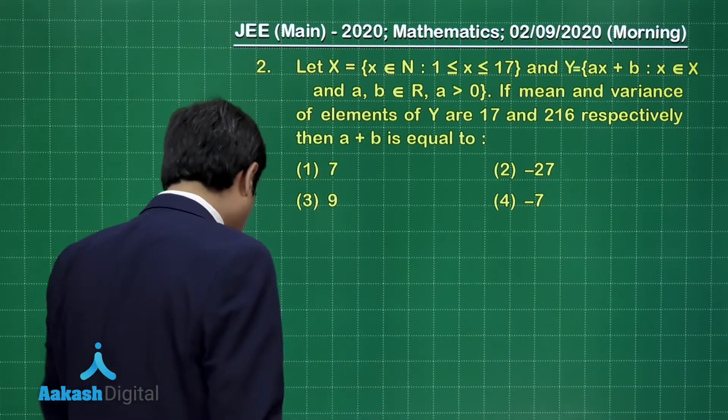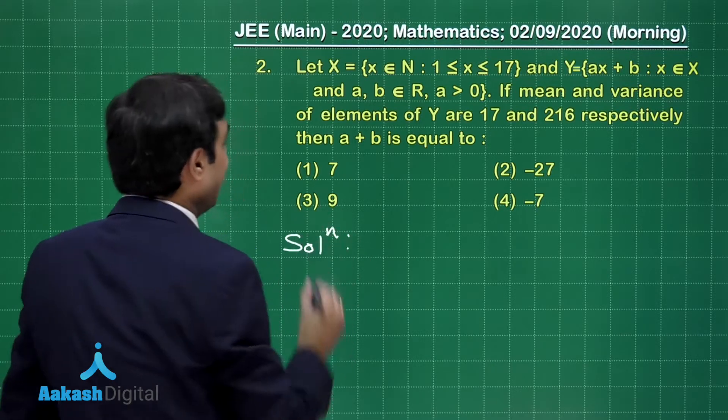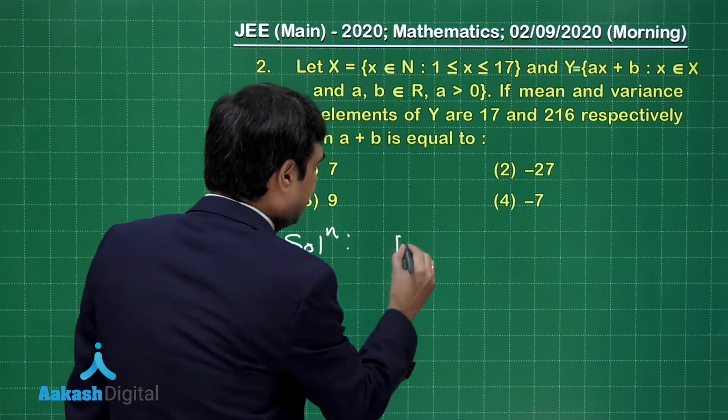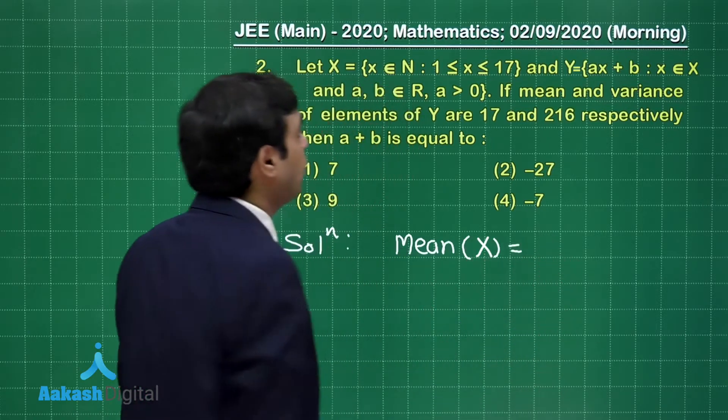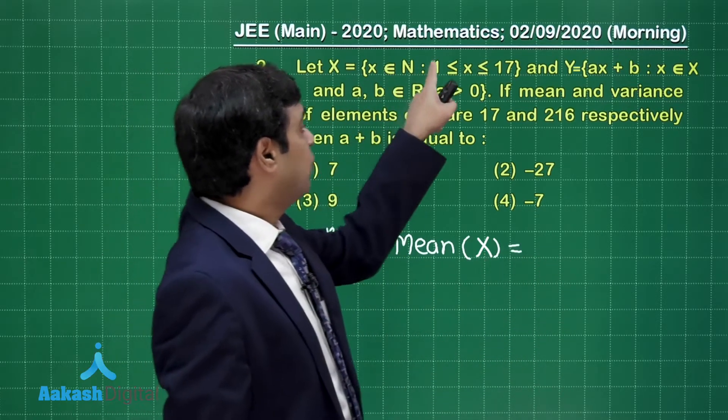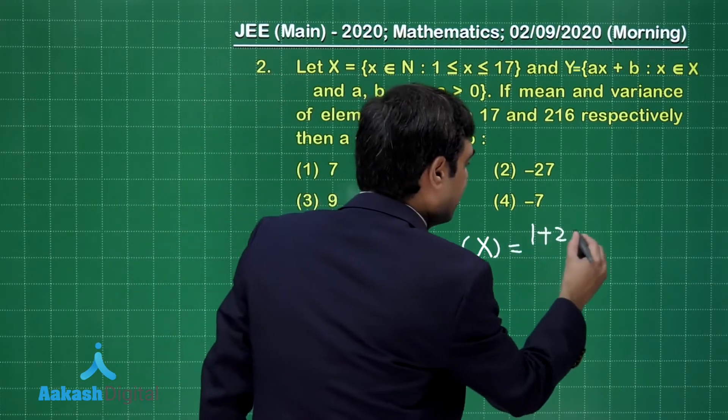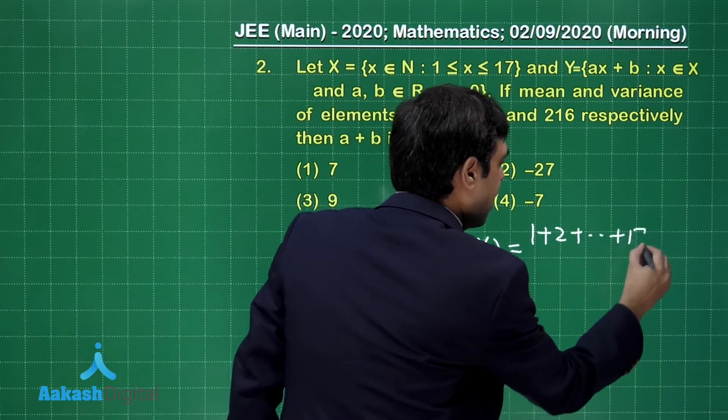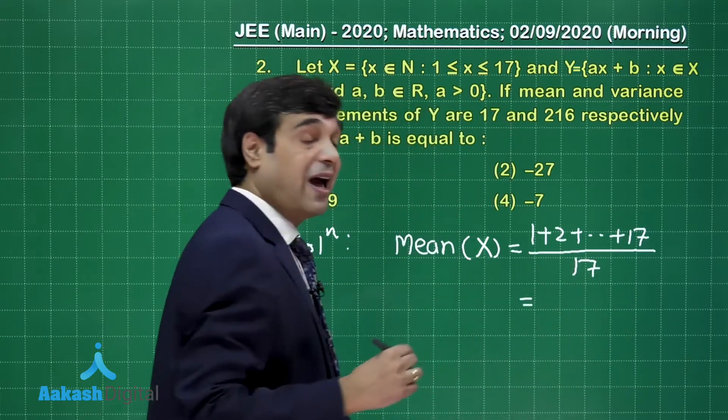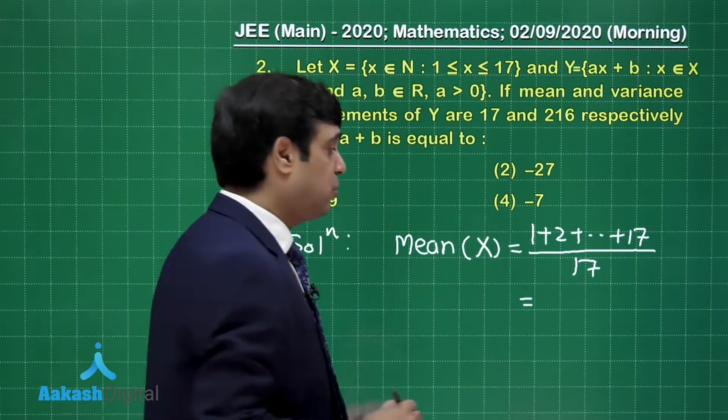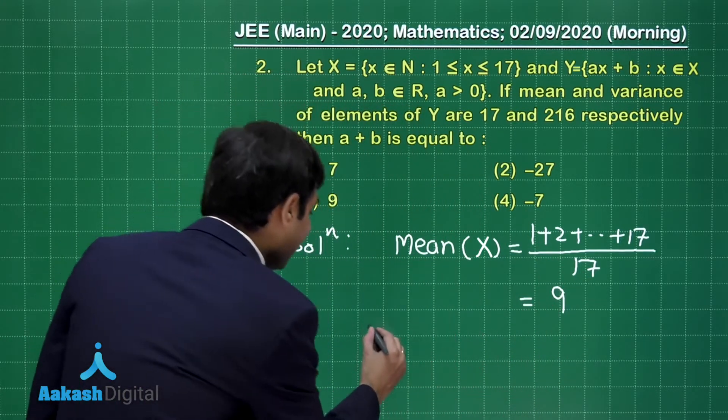For X, we can say mean = (1 + 2 + ... + 17)/17, giving you the value (17 × 18)/(2 × 17) = 9. Now variance of X, what is that?